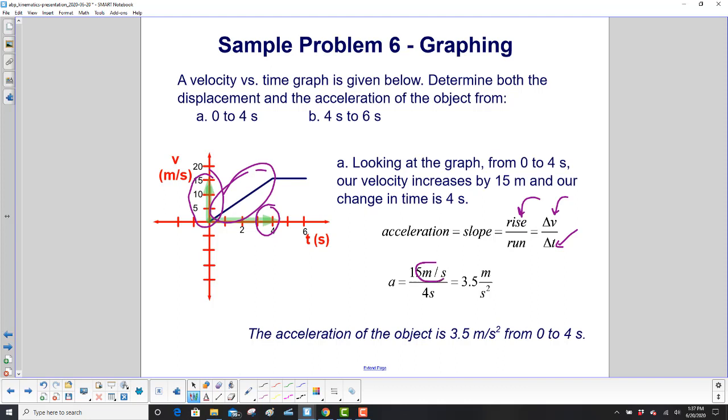And see how the units work out? Meters per second divided by second gives us meters per second squared. So the acceleration of the object from 0 to 4 seconds is 3.5 meters per second squared.